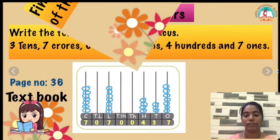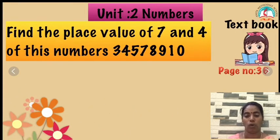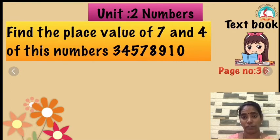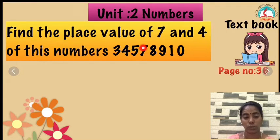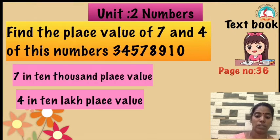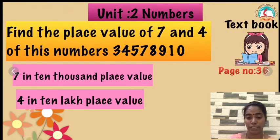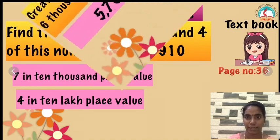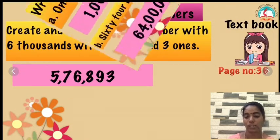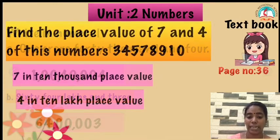The next one: we are going to see the place value of 7 and 4. Look at this question, children. Now, the 7 is in which place value? — 10,000 place value. So the answer is 70,000. The 4 is in what place value? You have to check: where is it — 1s, 10s, 100s, 10,000, lakh, 10 lakh? So the 4 is in the lakh place value.